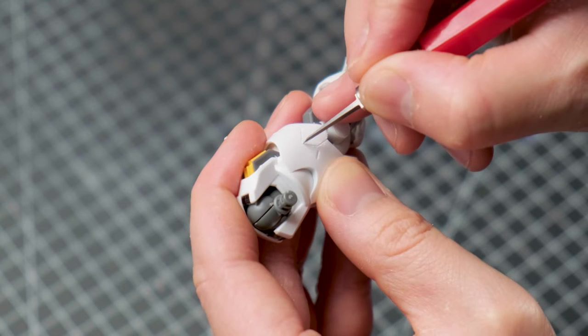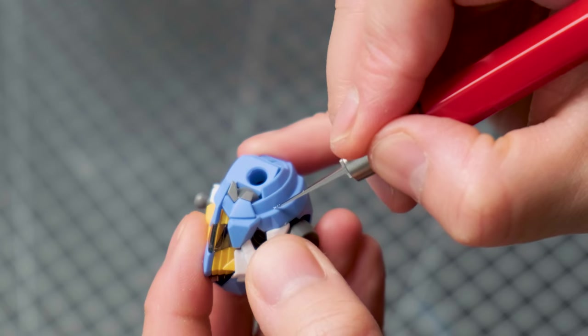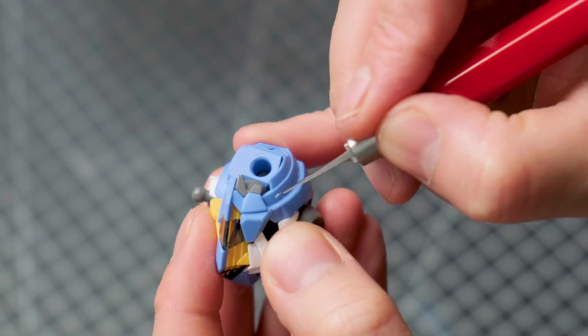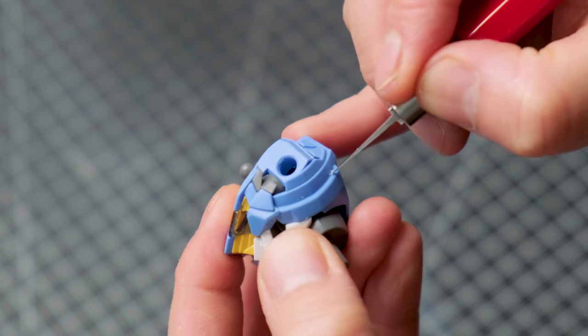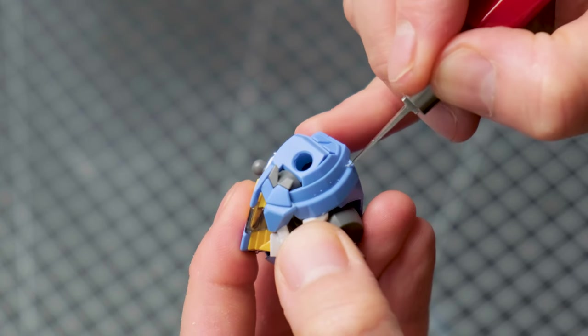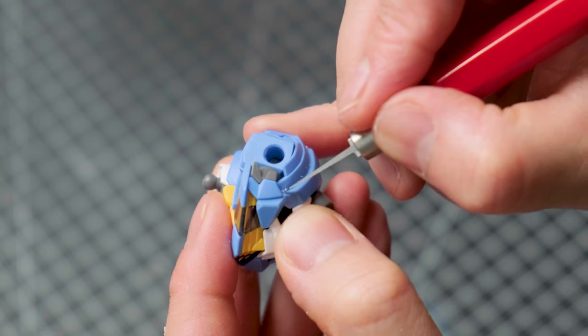Just like with custom panel lines, you can easily get lost in this step. I mean, have you ever tried counting all the edges, bevels, corners on a Gunpla kit? I try to stick to the most obvious and largest spots on the kit.